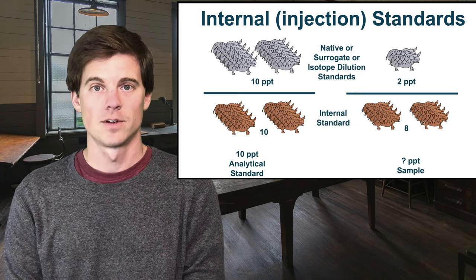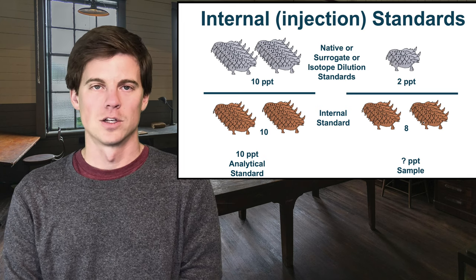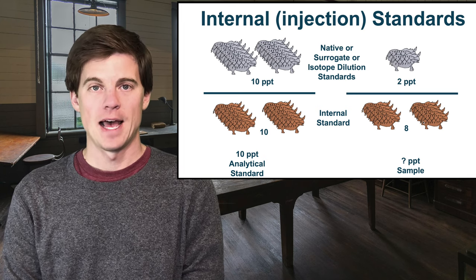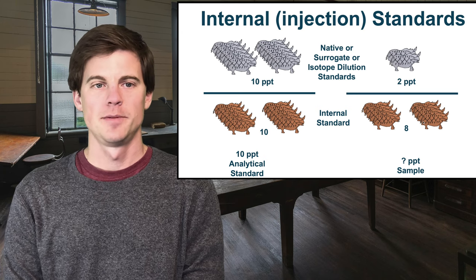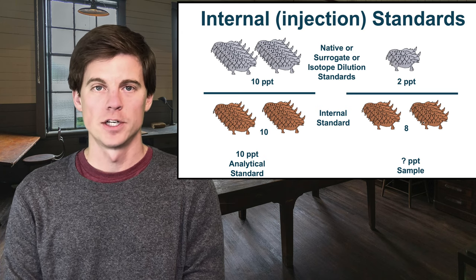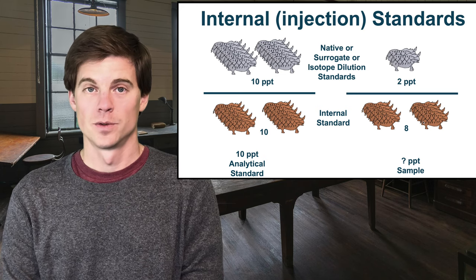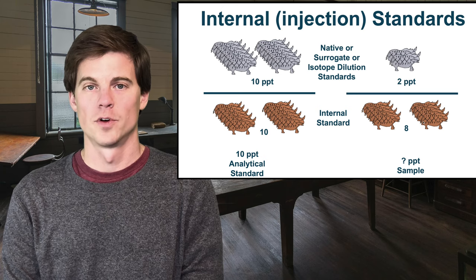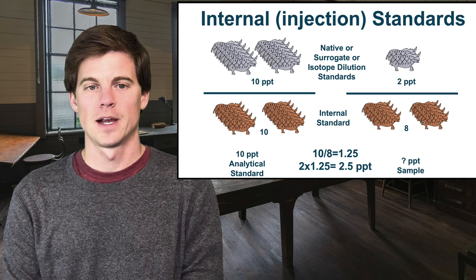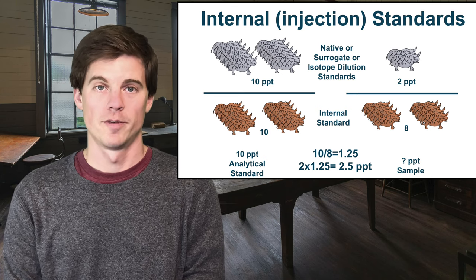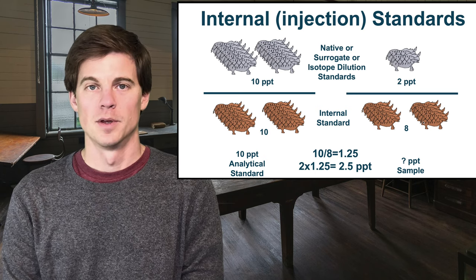Method 537 would look like this: natives on top, internal standards on the bottom. The math is very similar to what we did with isotope dilution standards. In a 10 PPT analytical standard we have a 1:1 ratio with our internal standard, but in the sample we only measure 8 for the internal standard. So we again have that lost recovery: 10 over 8 equals 1.25, and our native value of 2 gets corrected to 2.5.